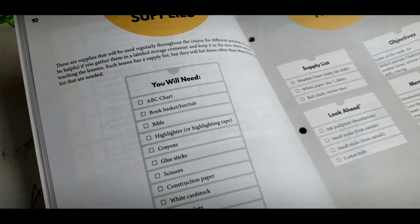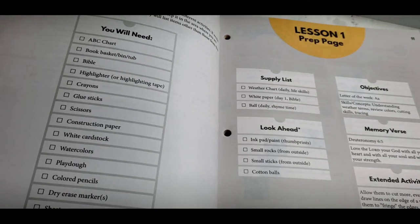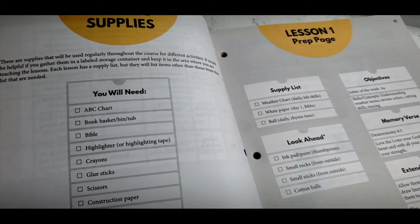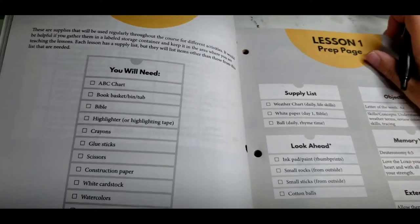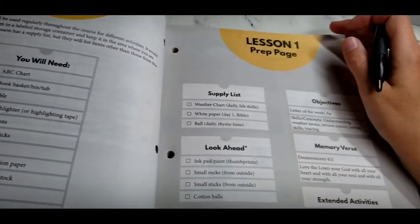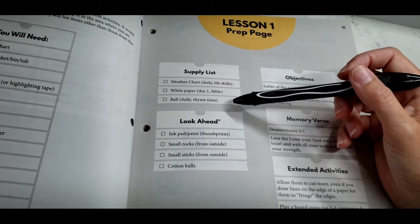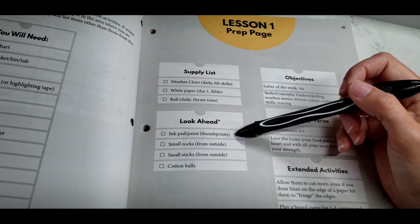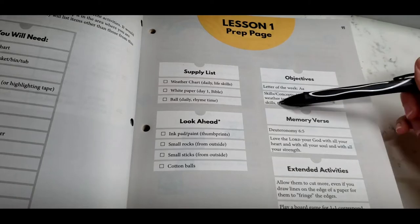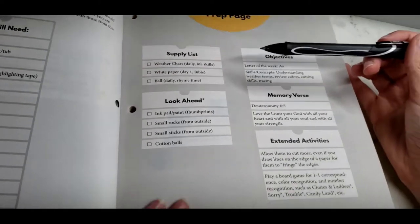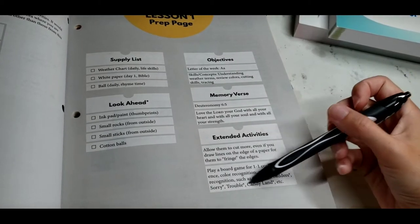Of course, supply list, you'll need ABC chart, book and basket bin tub, Bible highlighter, crayons, glue stick, scissors, construction paper, white cardstock, watercolors, play-doh, colored pencils, dry erase marker, and sheet protectors or laminator. So they also have videos that you can use that are very helpful for this. There's also, at this age, there's Alpha Blocks on YouTube. It's a great learning tool. There's Monster Math. I just saw someone mention on YouTube. I haven't actually looked at it yet, but we might be exploring that. I loved Max the Glow Train. Has a great ABC and also counting and some songs in Spanish. I love him for boys. So then you have, this is your prep page for the week one. Lesson one prep page. So you have a weather chart. You have white paper. And you have a ball. Then your look ahead. You'll be making thumbprints. You need some small rocks and sticks and cotton balls. Your objective is A this week. We're going to be learning weather terms, colors, cutting, scales, tracing, memory verse, and extended activities.